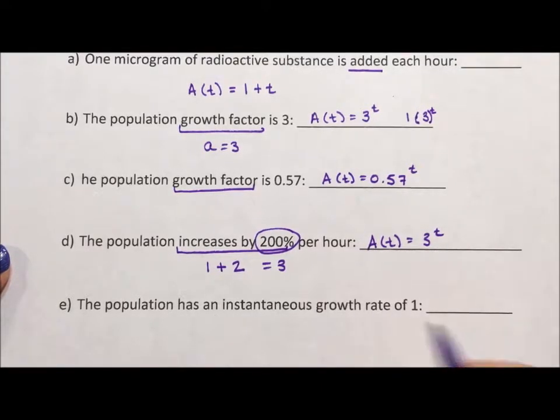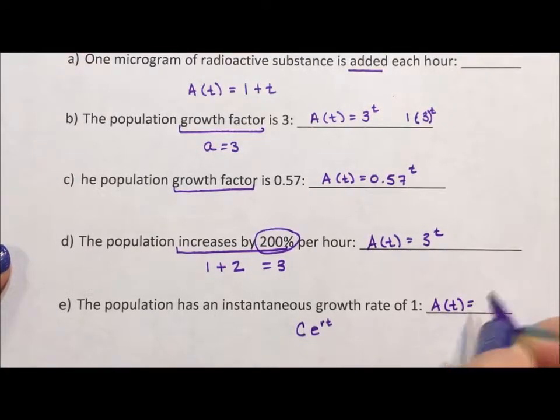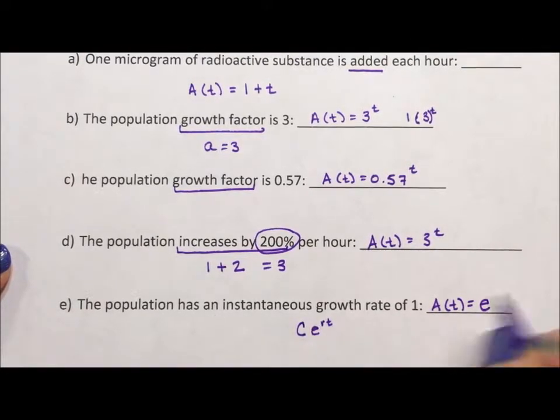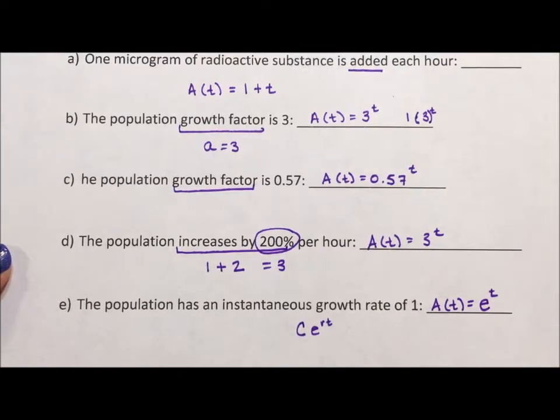The population has an instantaneous growth rate of 1. The instantaneous growth rate formula is Ce^(rt). I'm being told that r = 1 and we know C = 1, so A(t) = e^t.